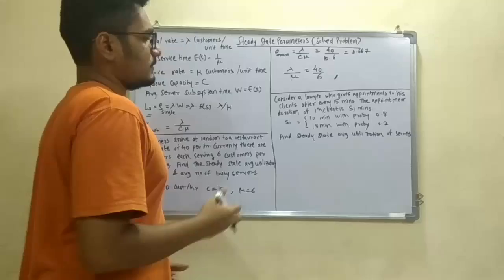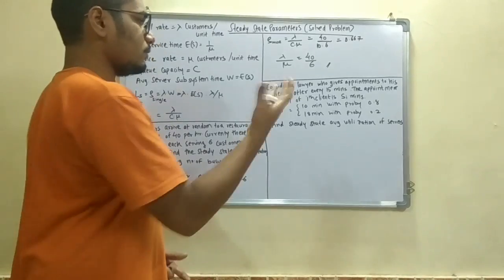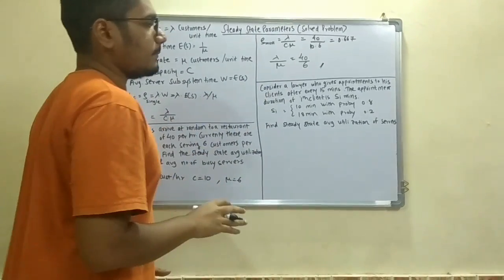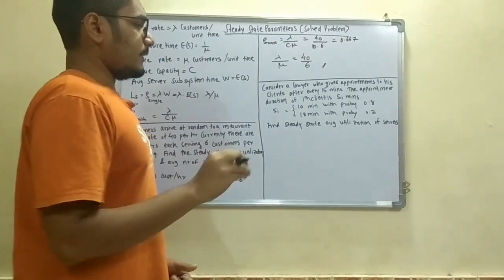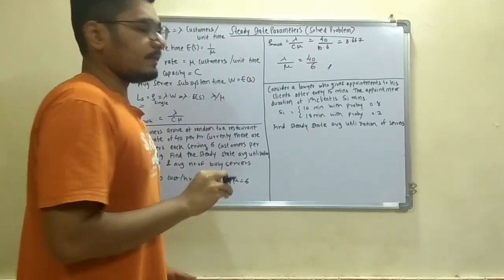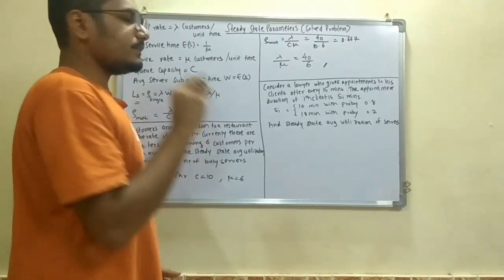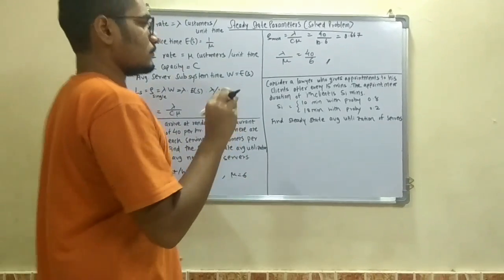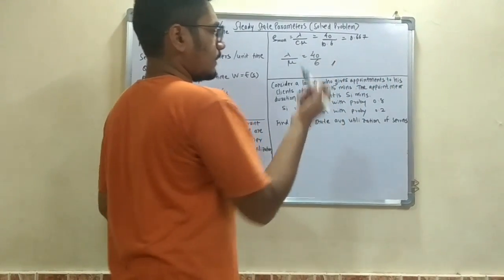Now the second problem is that there is a lawyer. You have to consider a lawyer who gives appointments to his clients after every 15 minutes. The appointment duration of the ith client SI minutes is given by this: that is 10 minutes with probability 0.8 and 18 minutes with probability of 0.2. You have to find the steady state average utilization of the servers.